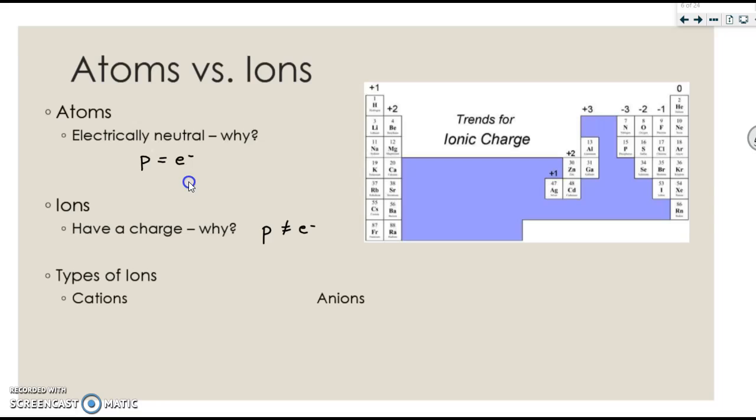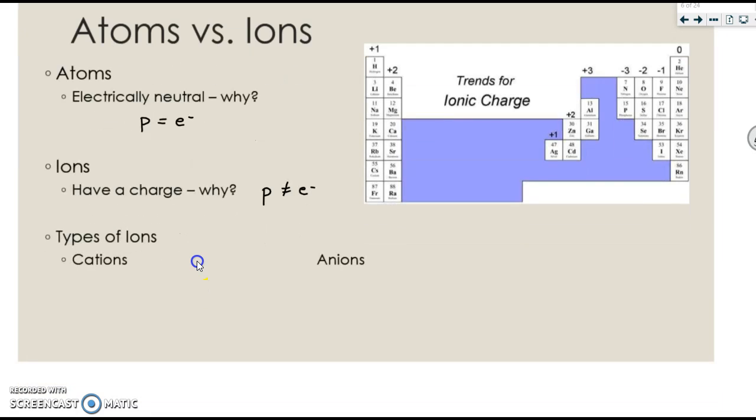We talked about positive ions, and we've talked about negative ions, but now we're going to give them additional names. So your cations are positively charged. These are going to be your metals. These are the substances that lose electrons. Your anions are negative ions. These are going to be your nonmetals, and these are going to gain electrons.